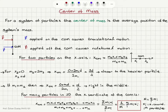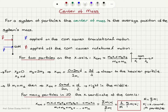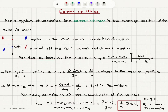We're going to talk about the concept of center of mass and how we find it. It is the average position of the system's mass. For a system of particles, we find the average position of the total mass. When we apply a force to a system, there are important consequences depending on whether the force is applied on or off the center of mass. If applied on the center of mass, it causes translational motion. If applied off the center of mass, it acts as a natural pivot point and also causes rotational motion.